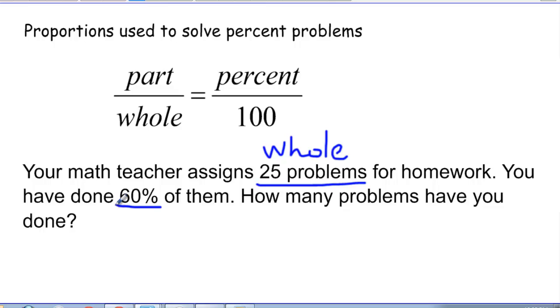So as I'm setting up my proportion, the part is the thing I don't know, so I'm going to put a variable in there. The whole assignment is 25 problems, so that goes there. The percent number is 60, and that percent means out of 100, so we put 60 over 100.